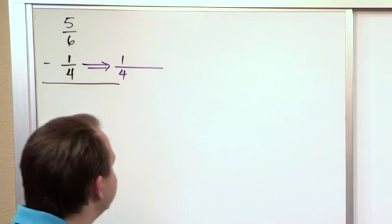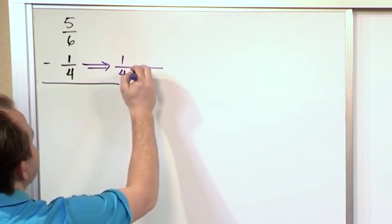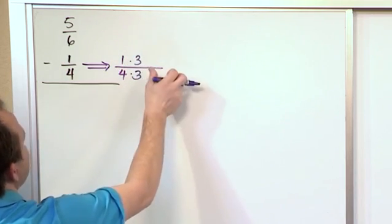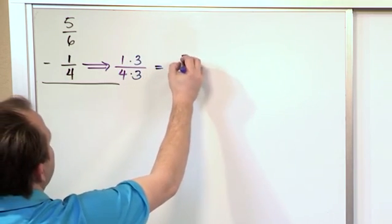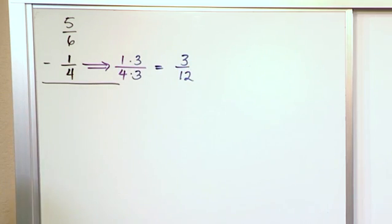12 can be divided by 6 and 12 can also be divided by 4. So I'm going to use 12 as my common denominator. Now in order to do that I need to multiply this fraction by 3 on the top and the bottom because that will give me 12. And down here I will have 3/12 for this fraction. 1 times 3 is 3, 4 times 3 is 12.